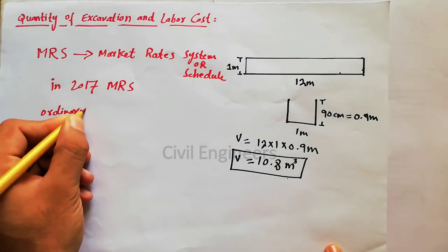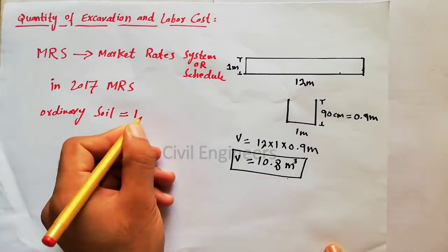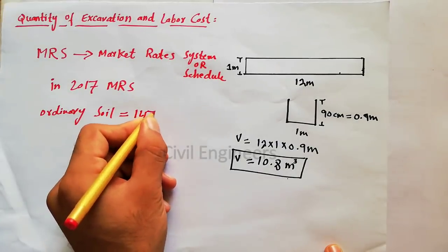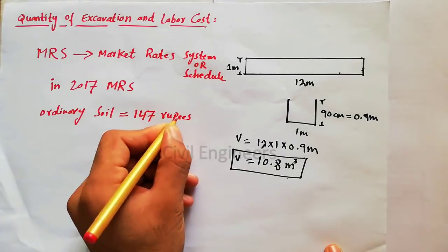For ordinary soil it is 147 rupees per cubic meter.